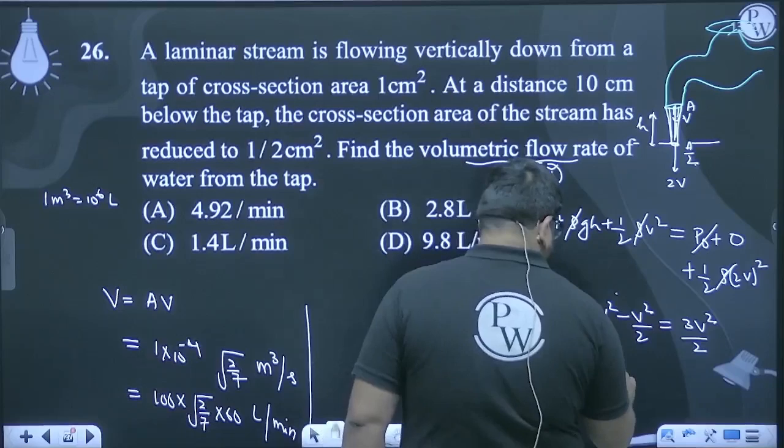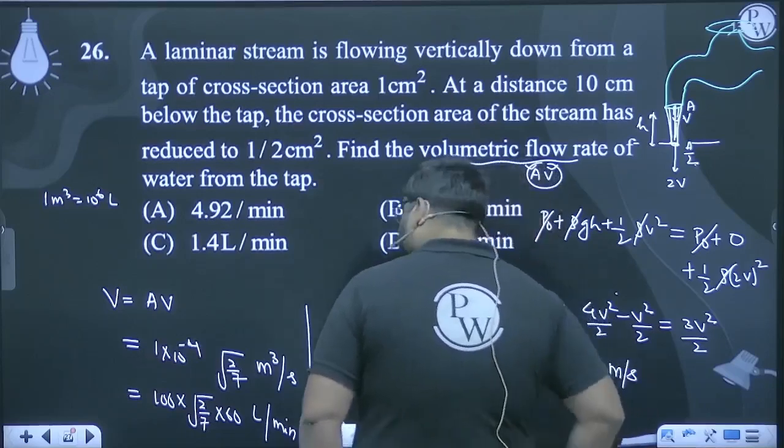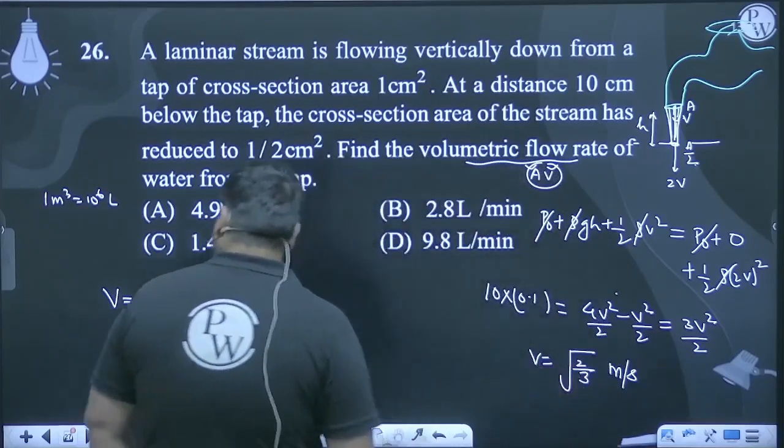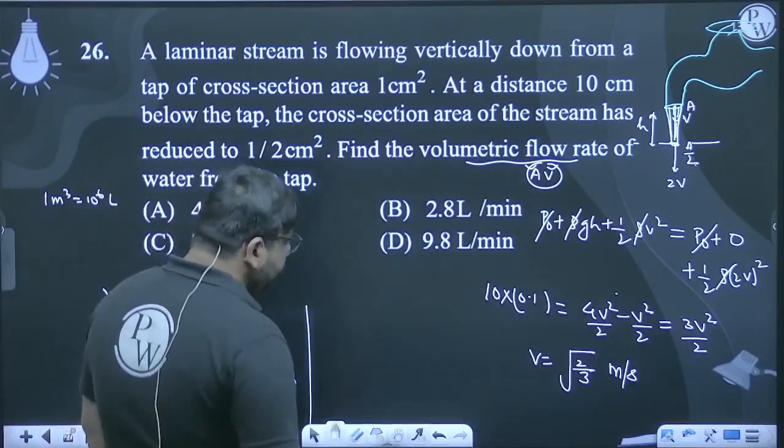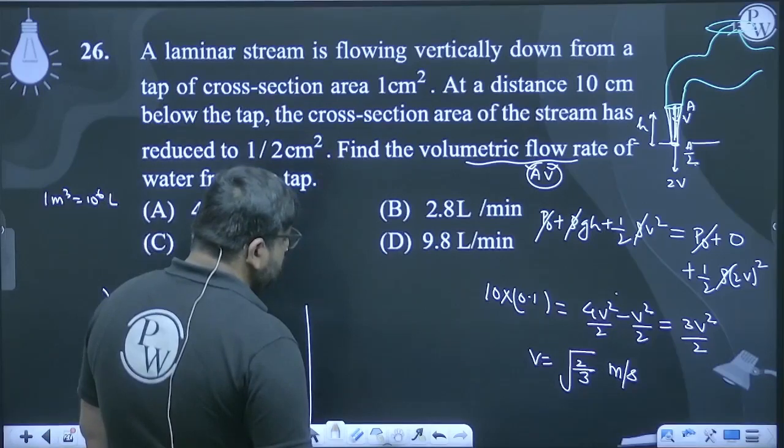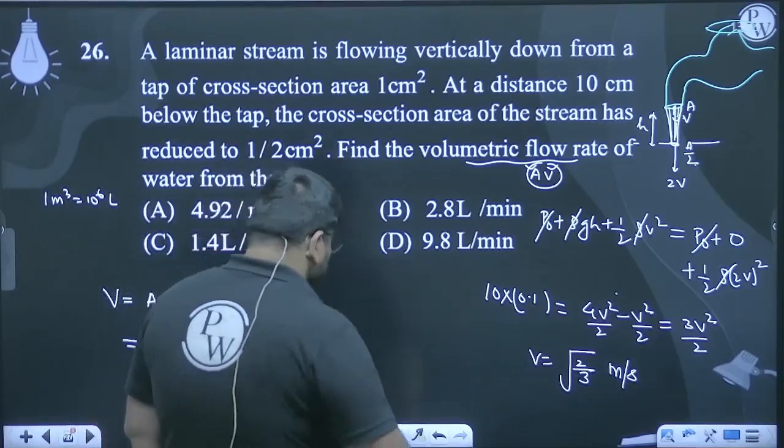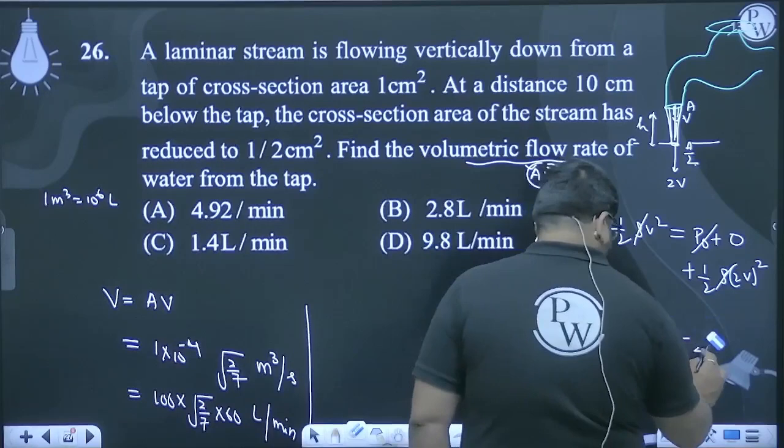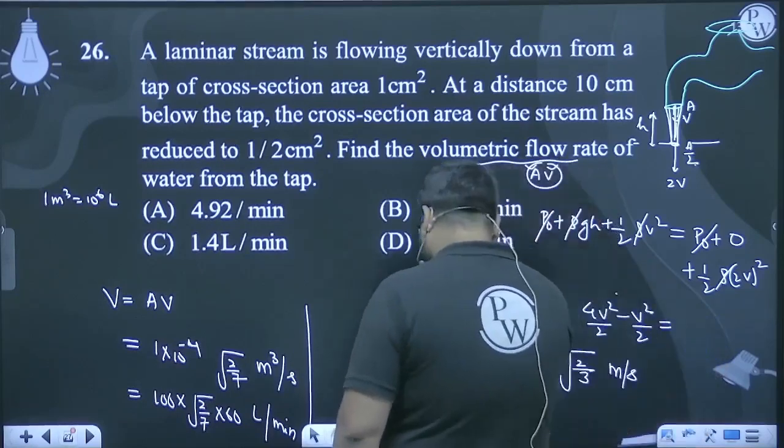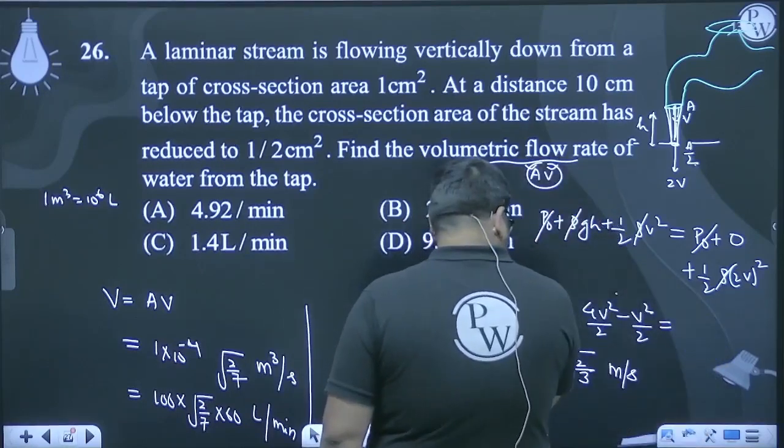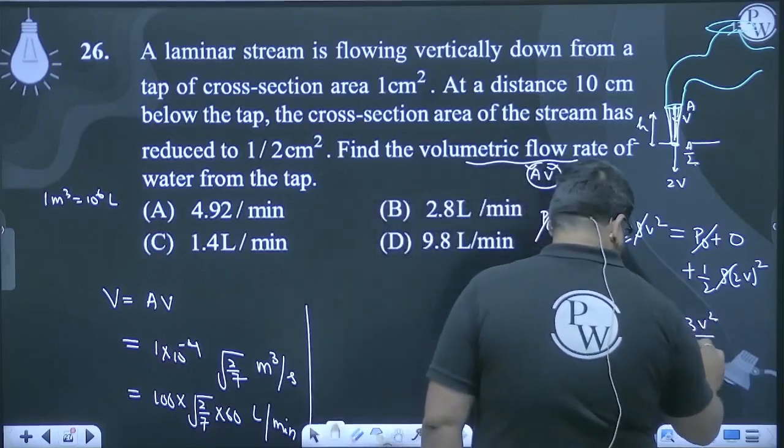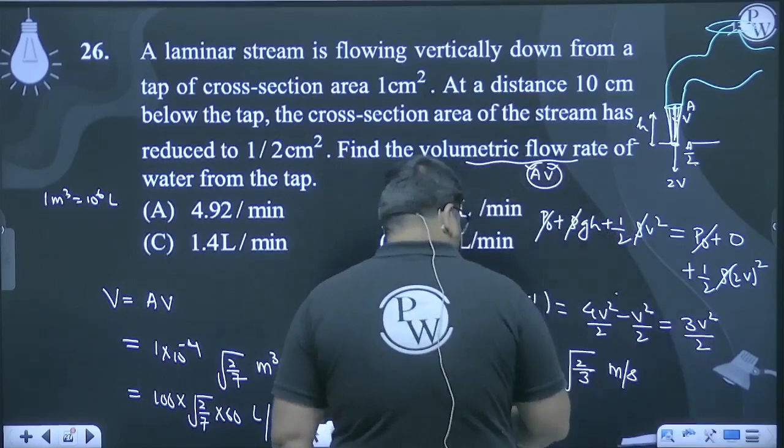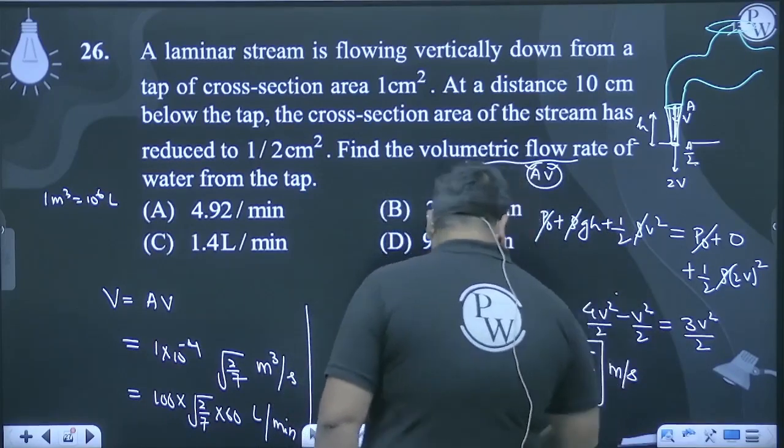So v value will be √(2/3) meters per second. This was one mistake. Let me check again. No, it's correct - 3 will come. So v value is √(2/3) meters per second.